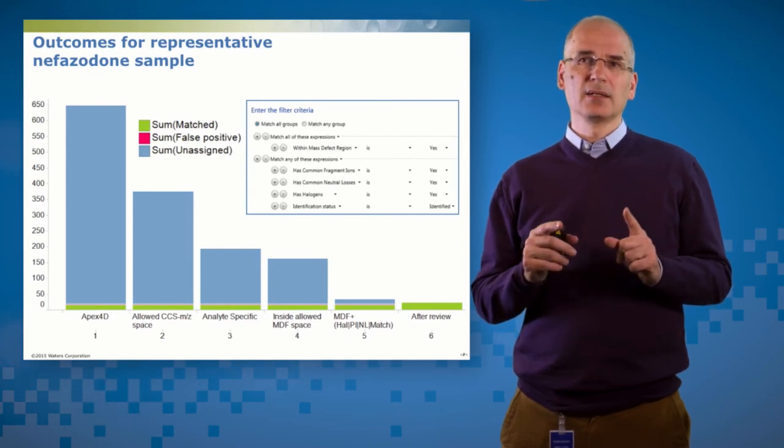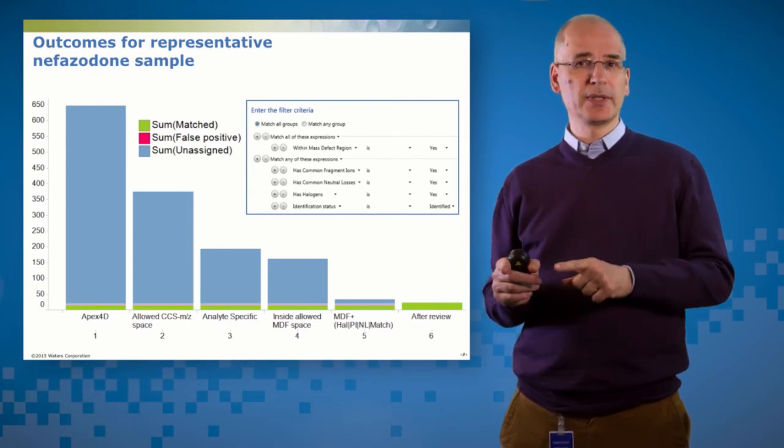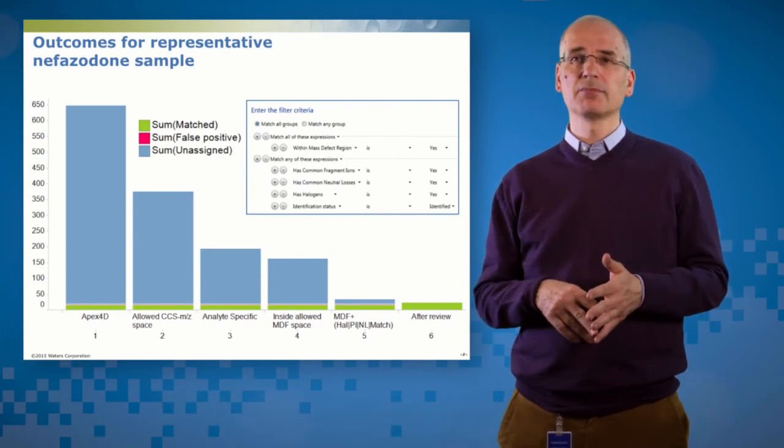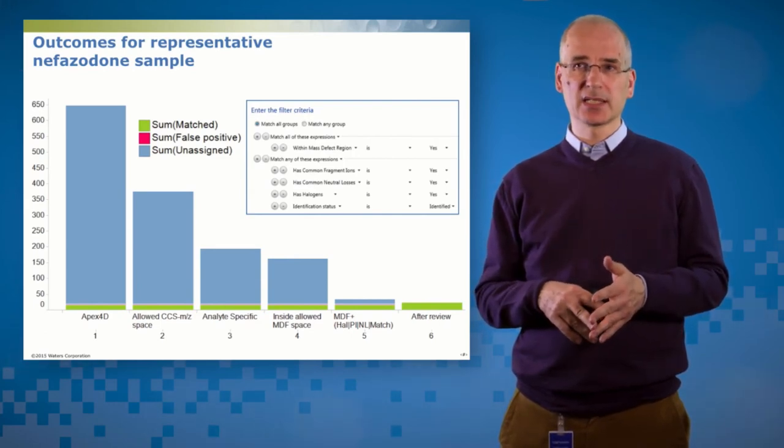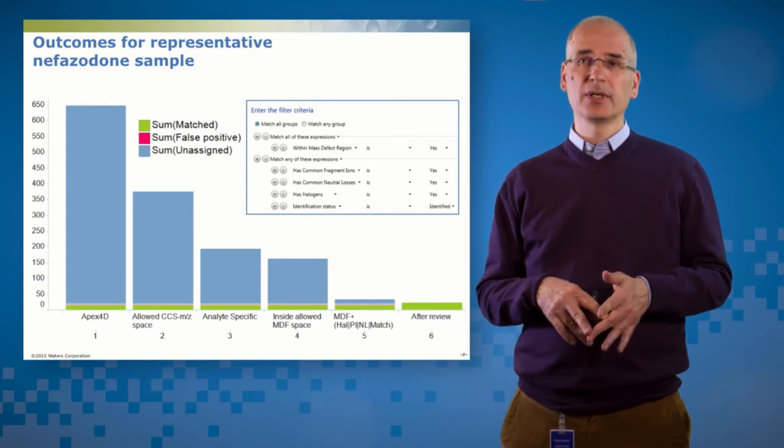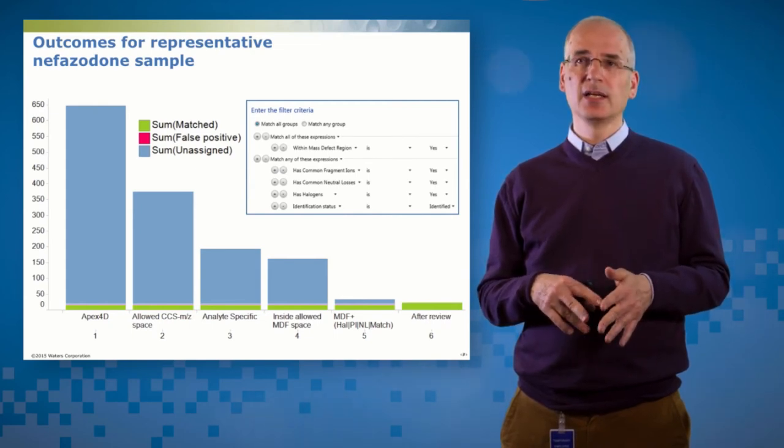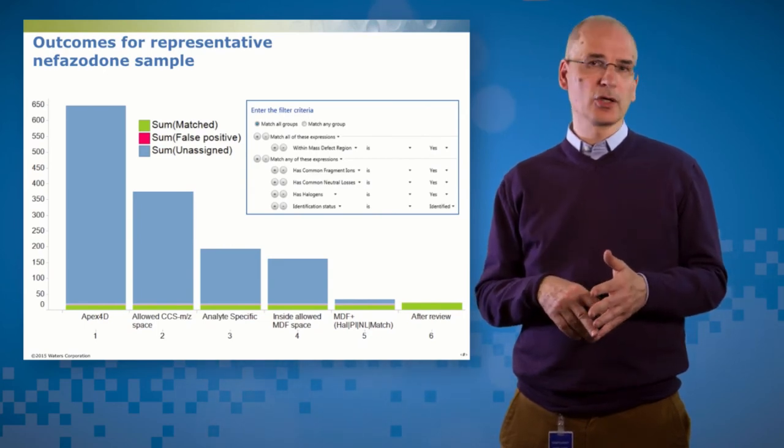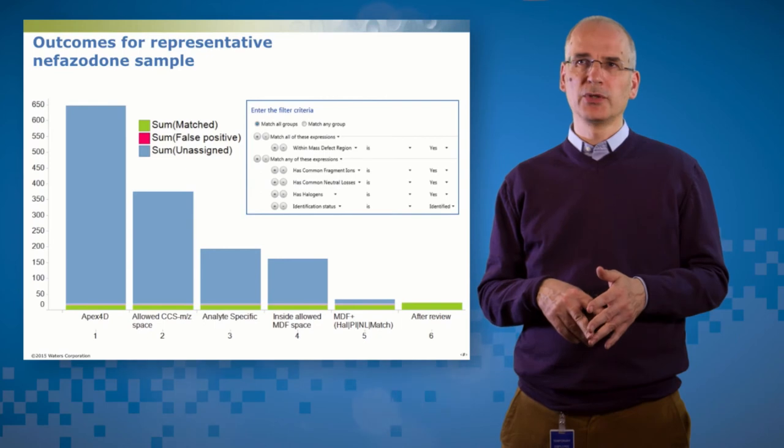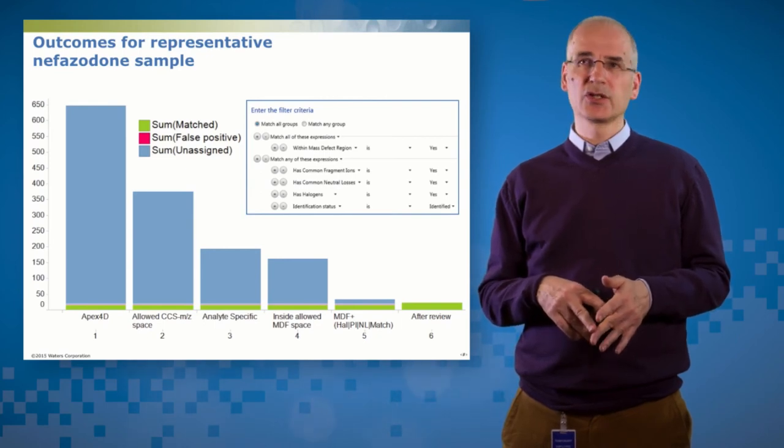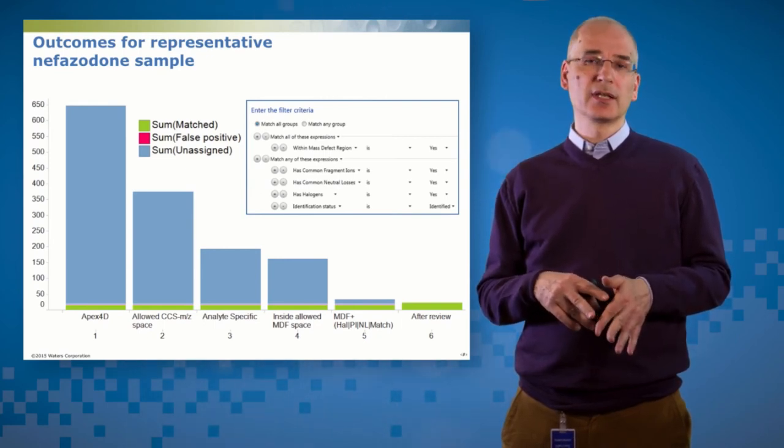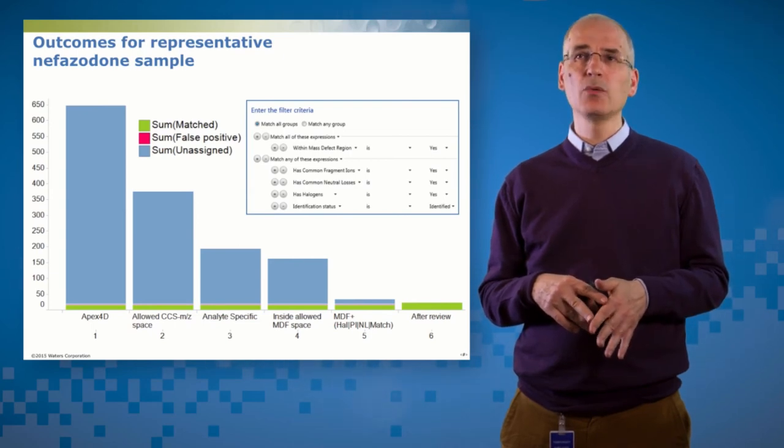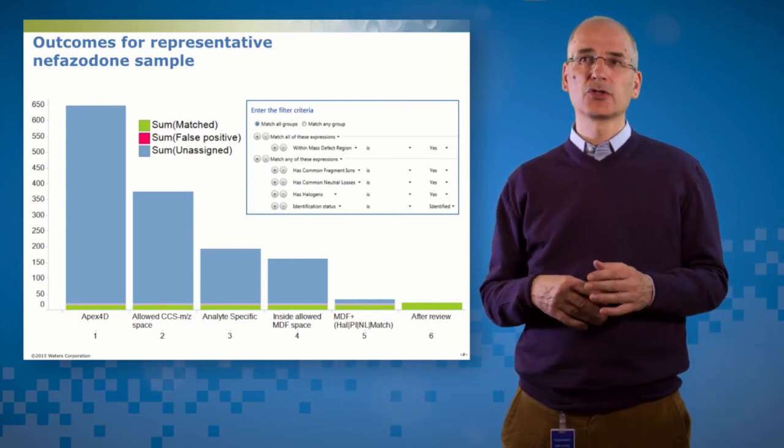I can then say, if it's in that space, but it's also in the control, remove it. So now I want analyte-specific components which are in allowed mass CCS space. And then I can impose a mass defect filter. And then finally, I can say, show me those, but then highlight the ones that have got either a common fragment ion or a common neutral loss, or they have a halogen isotope pattern, or they've been assigned a plausible biotransformation by the software. So if any one of those four properties are true, keep it.